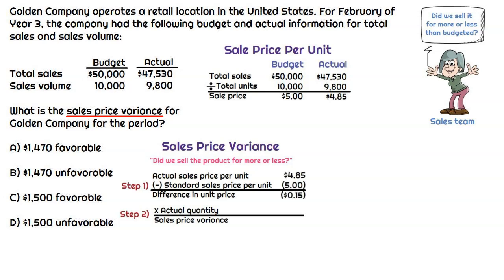The difference in unit price is $0.15. We multiply that by actual quantity, or actual sales volume, and that results in a sales price variance of $1,470. That's going to be unfavorable because the actual sales price per unit was lower. The goal for the sales team is to sell for more than budgeted or the standard. So the sales price variance is $1,470 unfavorable, which is what the question is asking for.